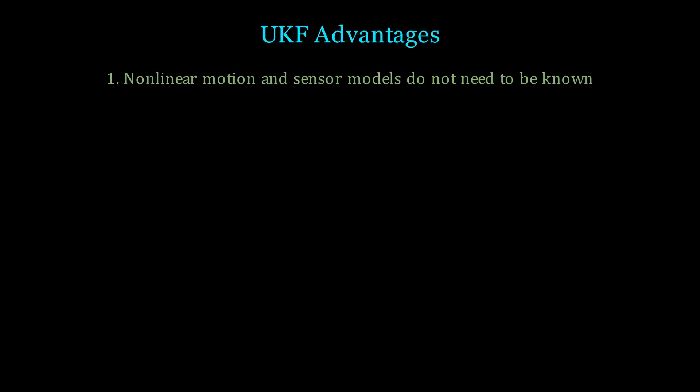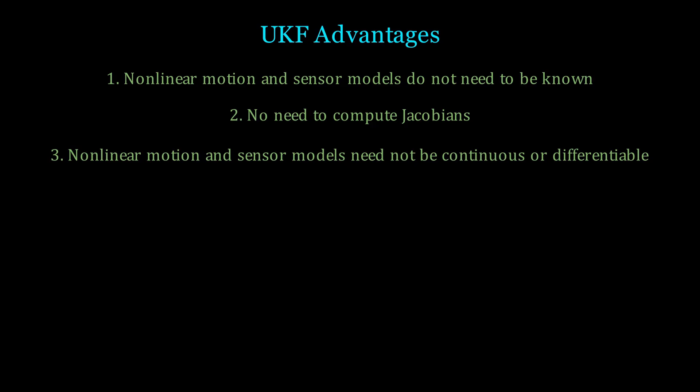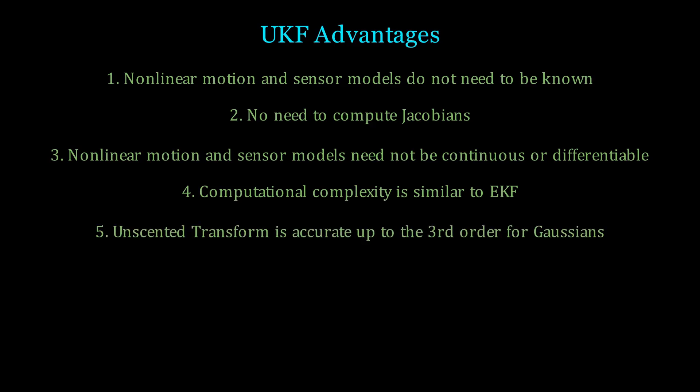With the UKF, we don't need to actually know our motion and sensor models. In addition, we no longer need to compute Jacobians which can be computationally complex. As a result, our models need no longer be continuous or differentiable, and the resulting computational complexity is similar to the EKF. Lastly, specific to Gaussians, the unscented transform process is accurate up to the third order moments, because the third moment of any Gaussian is zero. Otherwise, the unscented transform is only guaranteed accurate up to the second order, because we match the first and second moments. This high order accuracy is why the UKF performance is so good.